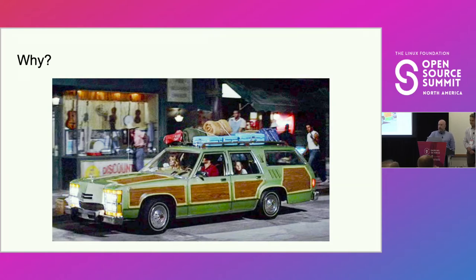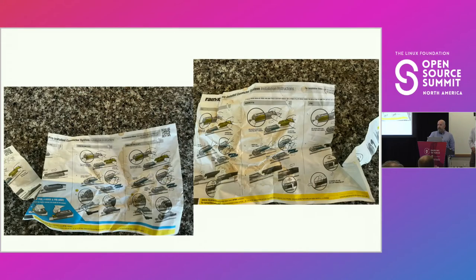Around Christmas time this year, we were getting ready — my family — to go over the river and through the woods to grandmother's house. We were loading up the family truckster, and my wife came to me and said, have you changed the windshield wipers? They need to be changed. It was 6 in the morning, dark outside, raining. I didn't want to change them, but I had them, so I went out. Out of the package fell 17 different adapters, and a couple pages of instructions — like, find a penny and use it to figure out how wide the arm is. If it fits inside this slot, use this set of instructions; if not, use that set. And so here I was, in the rain, getting wet, trying to change my windshield wiper blades.